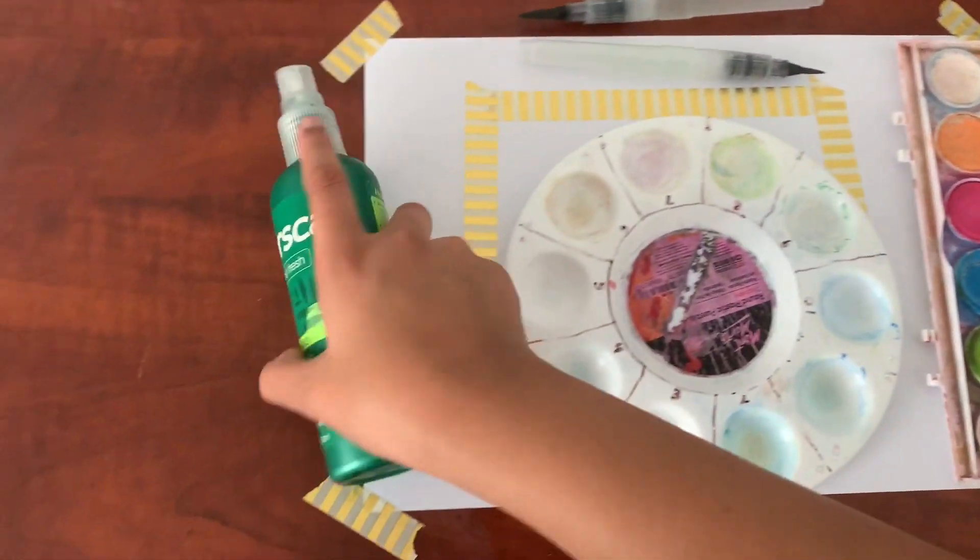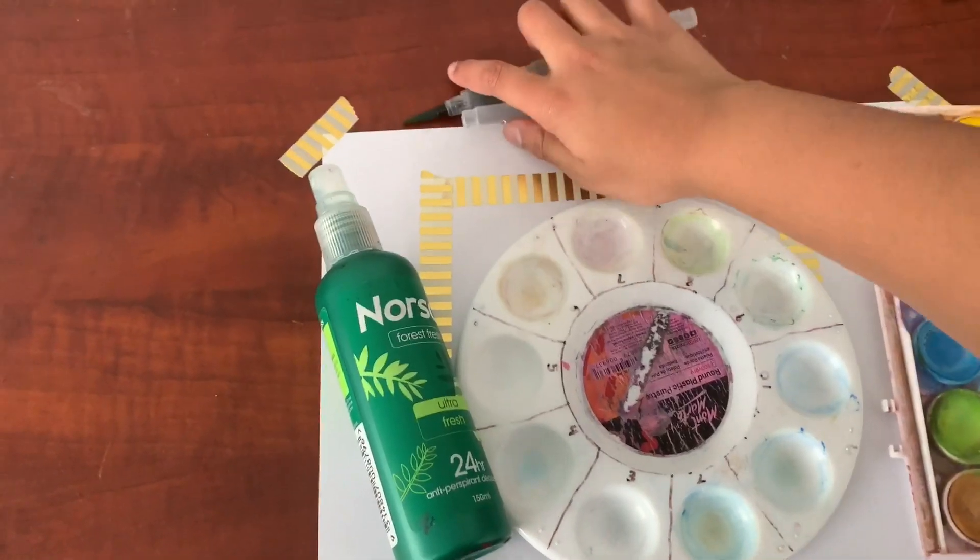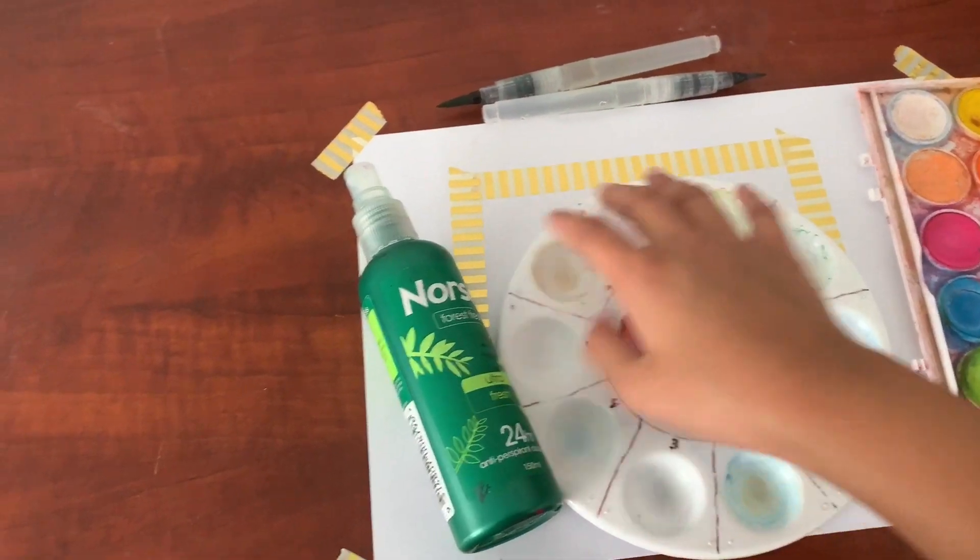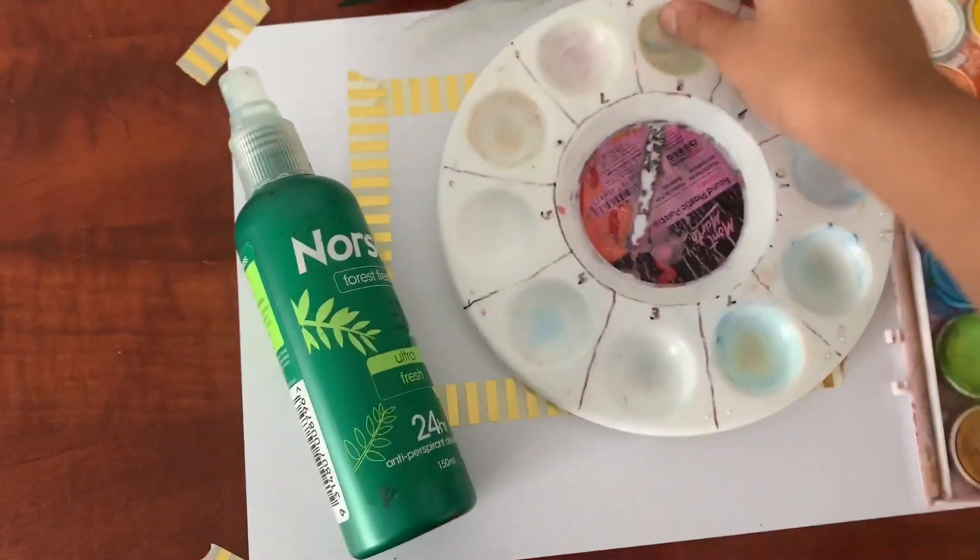So I'm using this water bottle, my water brushes, a paint palette, and that's my piece of paper, and of course my watercolor palette. So let's get started.